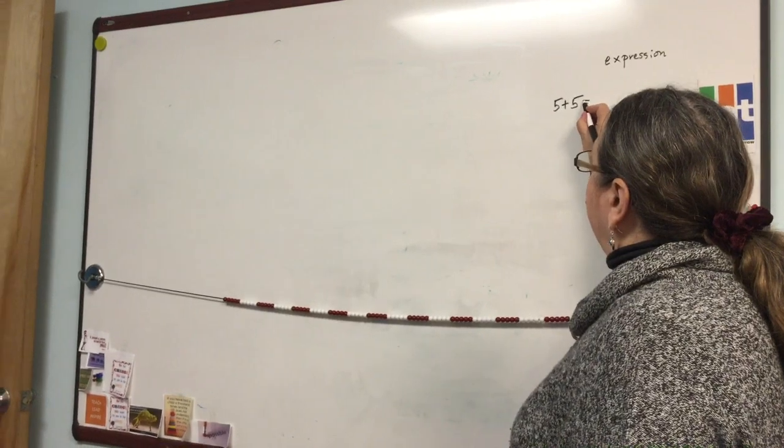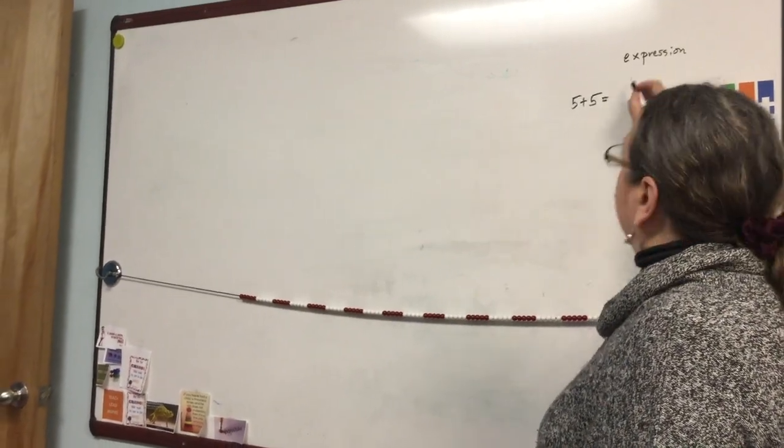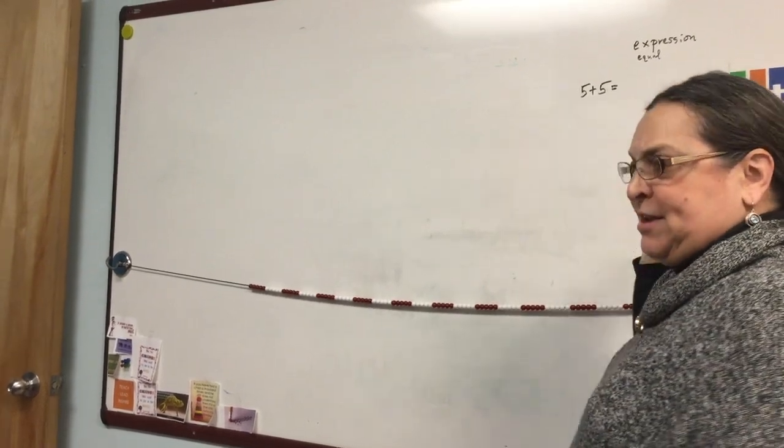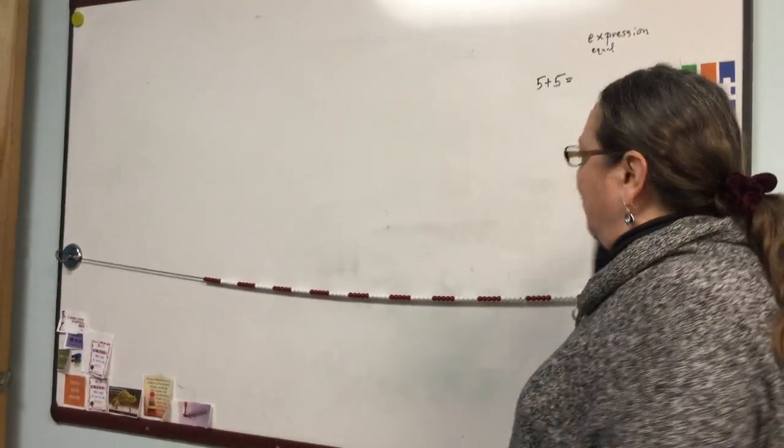If I write this sign, what is this sign called? Equal. It's called an equal sign. Now you all said right out loud before I even said anything, oh, that's easy, it's ten.